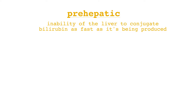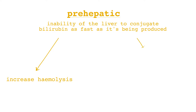Pre-hepatic jaundice is the inability of the liver to conjugate bilirubin as fast as the body is producing unconjugated bilirubin. The causes of pre-hepatic jaundice fall into two categories: those which increase hemolysis and those which decrease bilirubin metabolism.